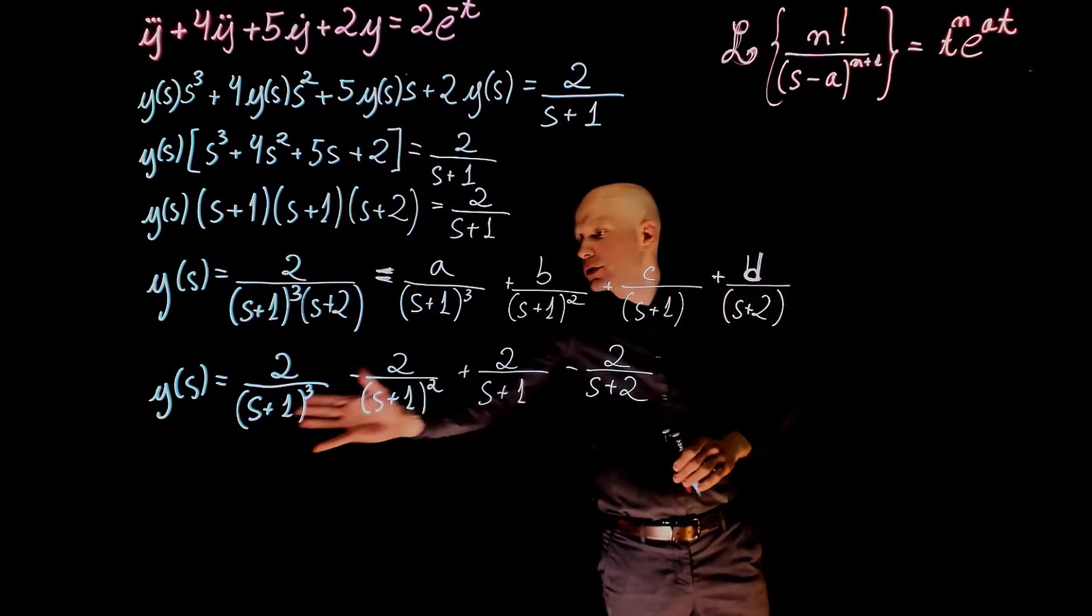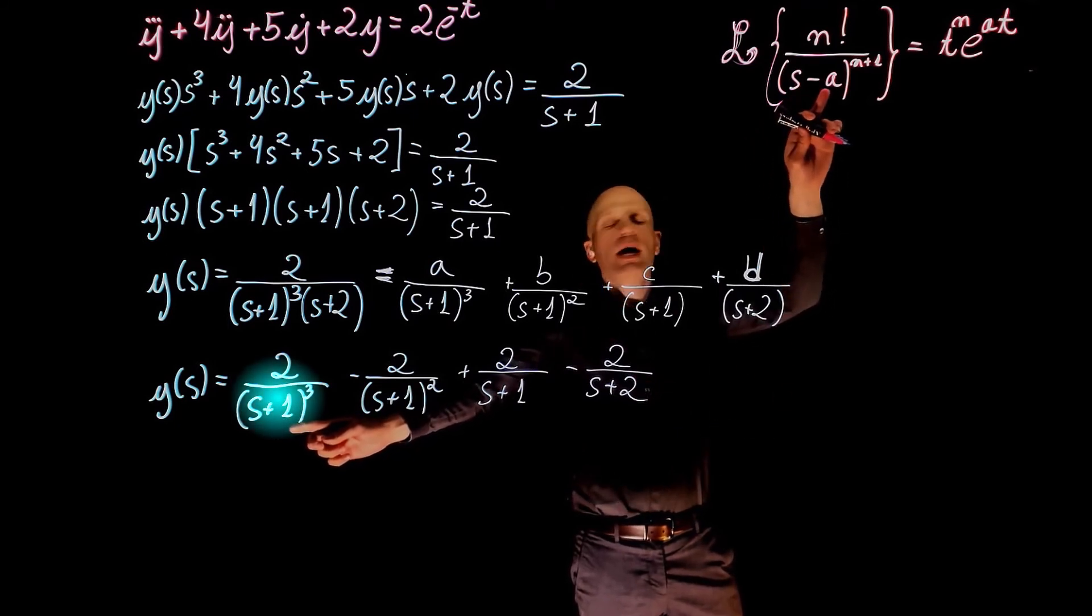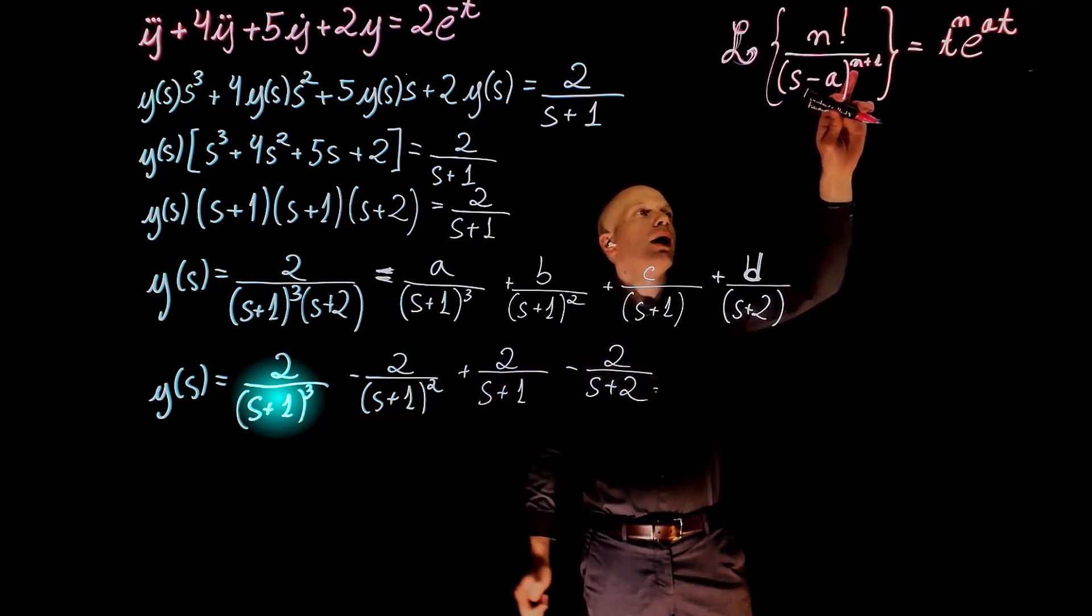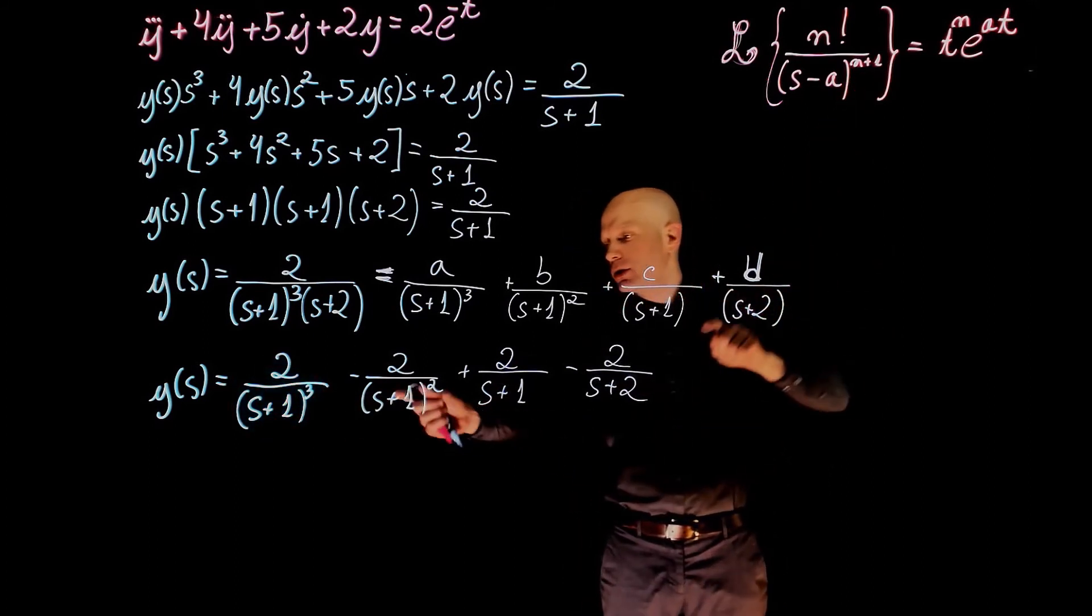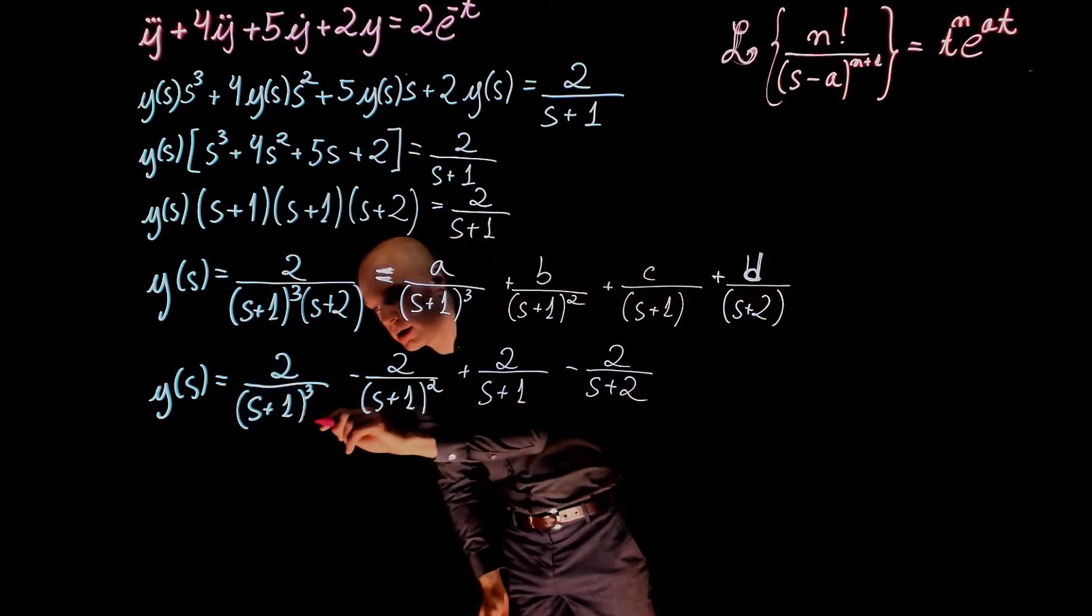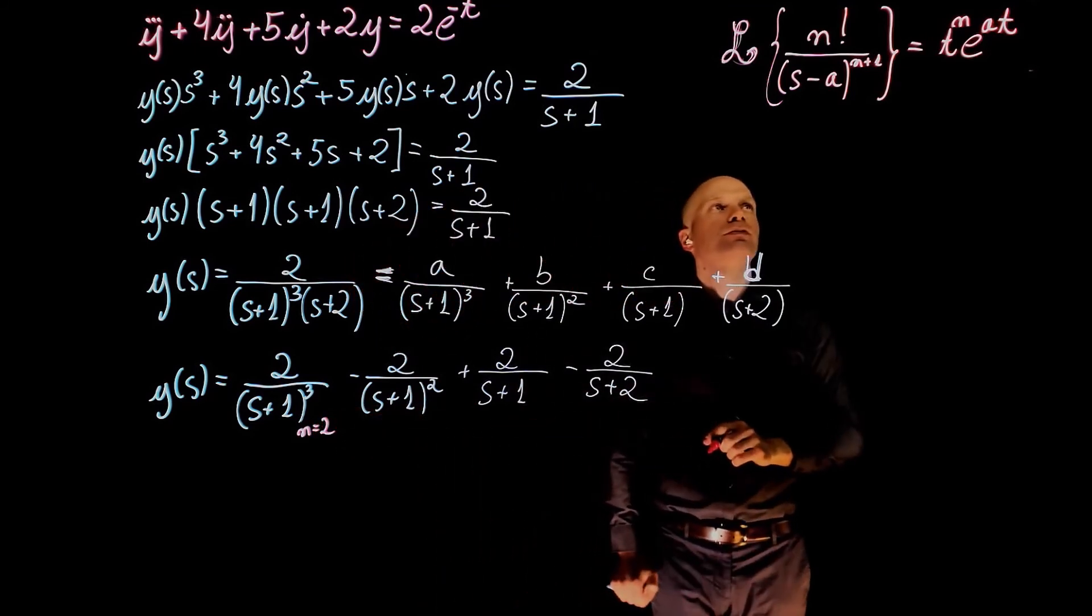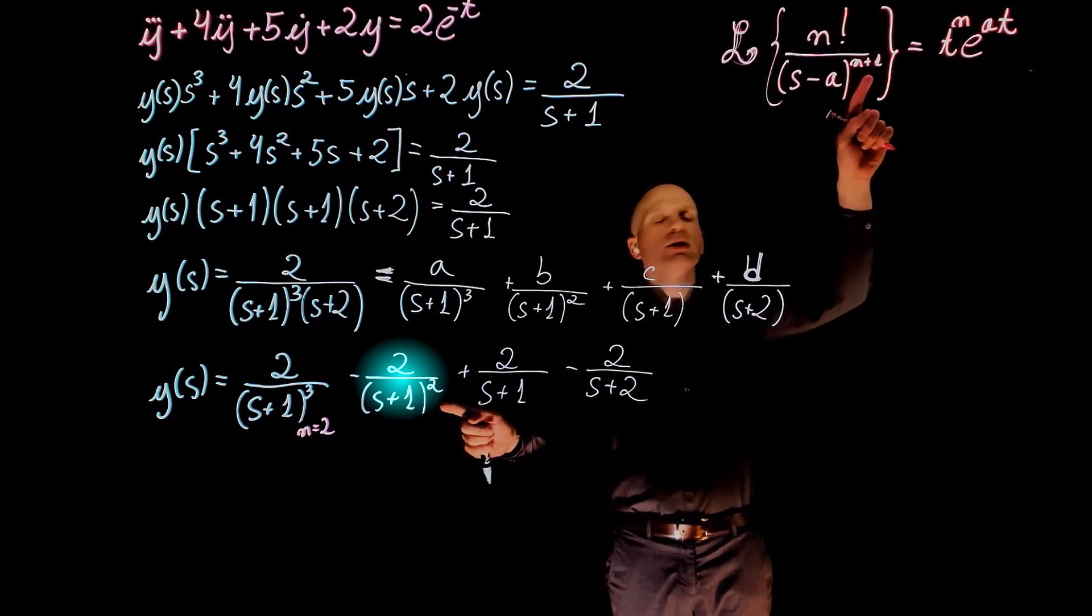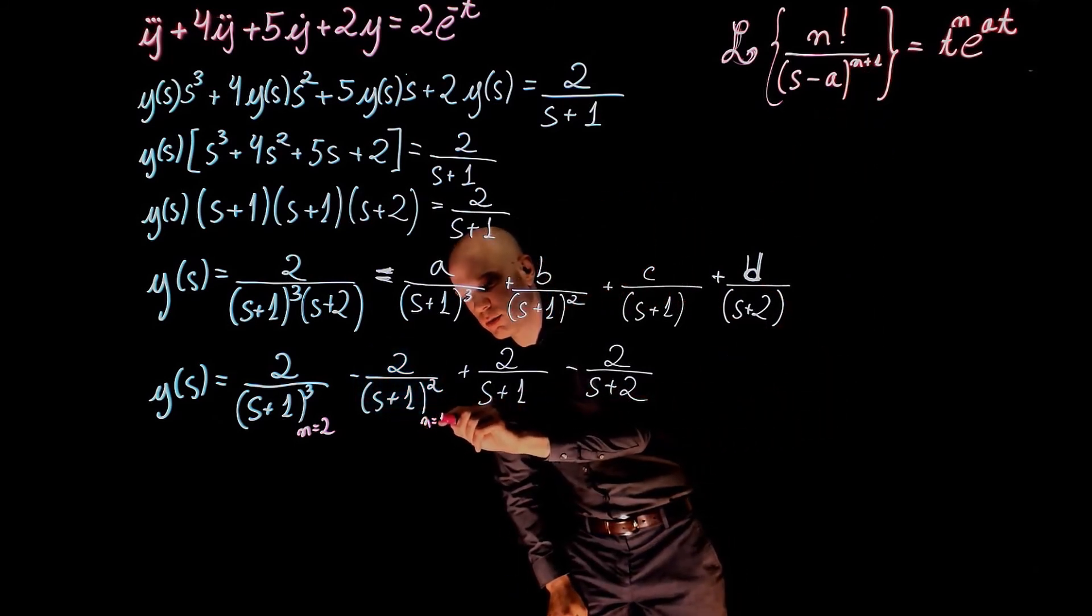Let's look at the first term. We have s plus 1 here, where a is negative 1. n plus 1 equals to 3, so for the first element, n equals to 2. For the second element, n plus 1 equals to 2, so n equals to 1.